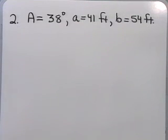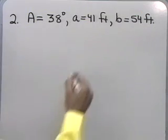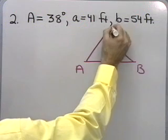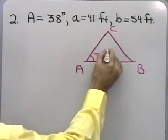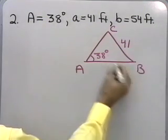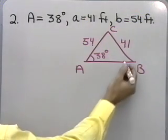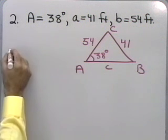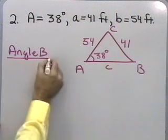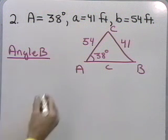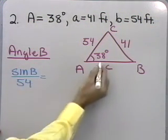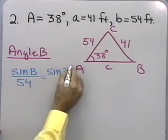Now let's work the second problem. Angle A is 38 degrees, side A is 41 feet, and side B is 54 feet. Drawing a diagram with angles A, B, and C: angle A is 38 degrees, side A is 41 feet, and side B is 54 feet. The only thing we can solve for first is angle B. Using the Law of Sines: the sine of B is to 54, as the sine of 38 is to 41.